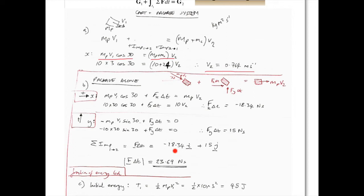And finding the magnitude of the impulse, just a matter of taking the norm, so 18.34 squared plus 15 squared, square root, gives us just under 24 newton seconds.